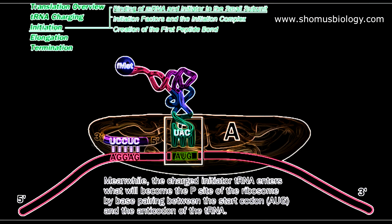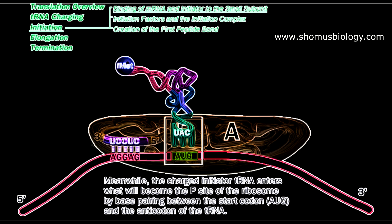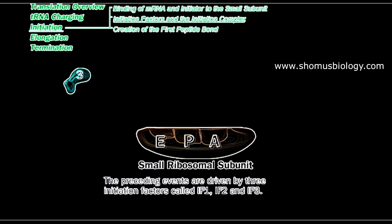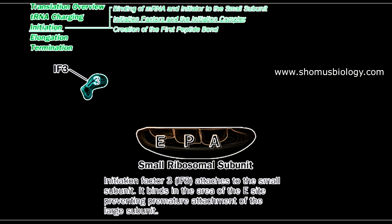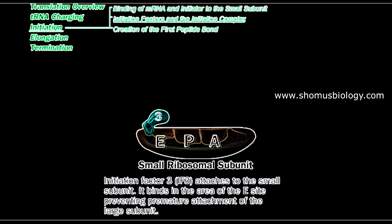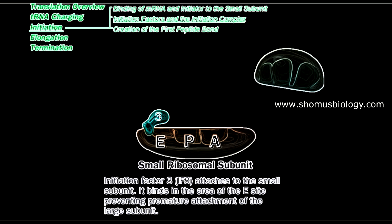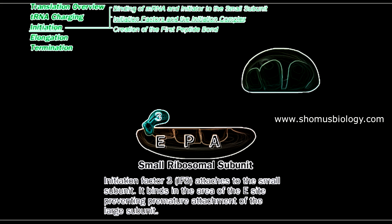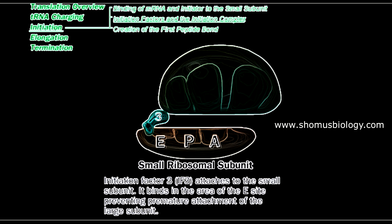Before the large ribosomal subunit assembles, initiation factors play key roles. Initiation factor 3 (IF3) associates with the E site of the small ribosomal subunit, blocking it so no tRNA can interact there. IF3 also prevents the large subunit from associating with the small subunit, keeping them separated.